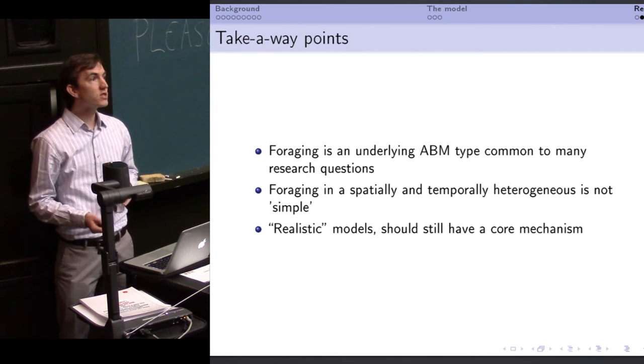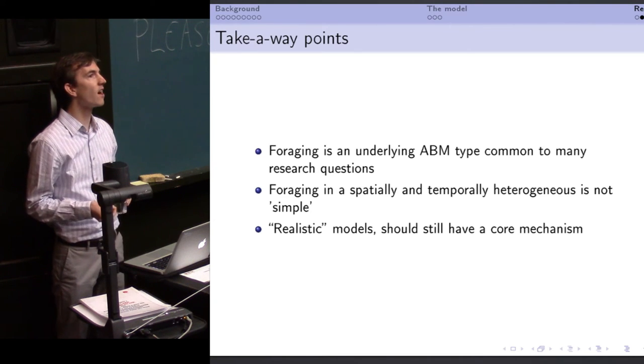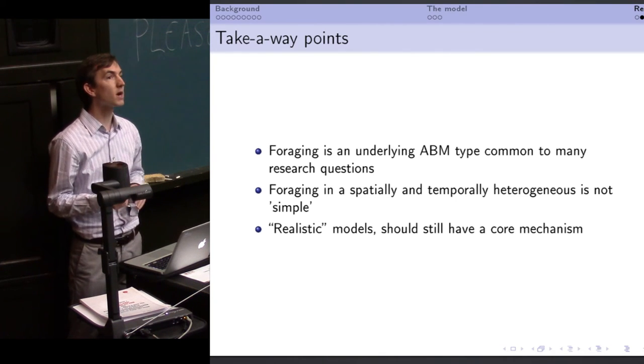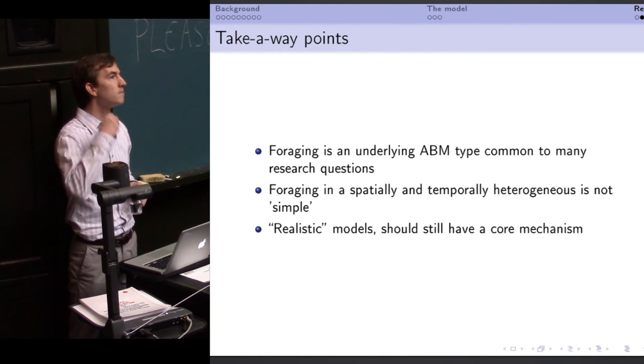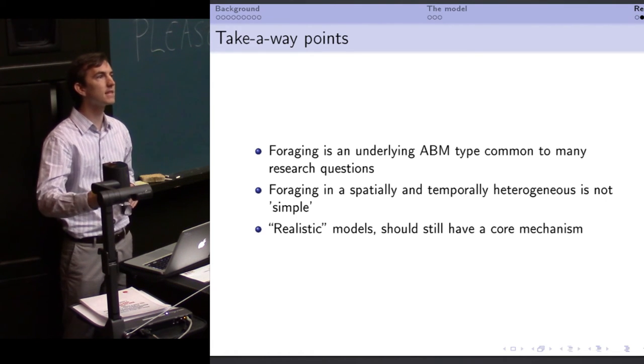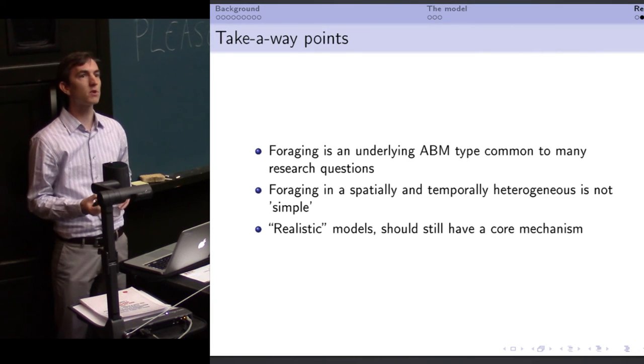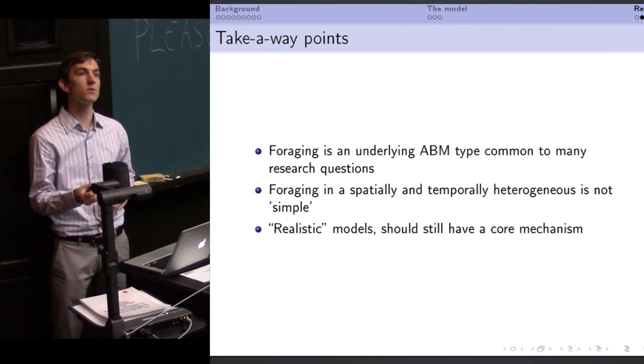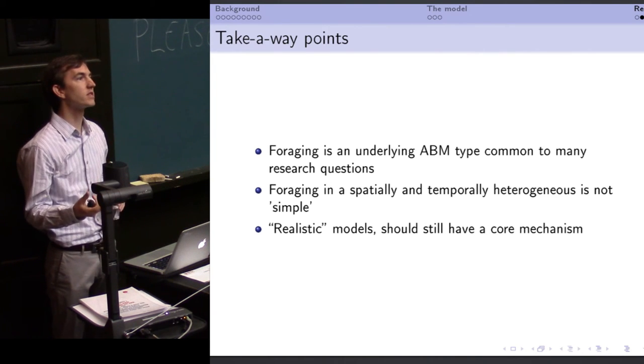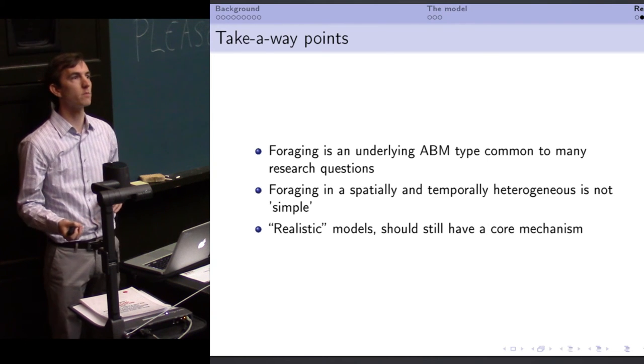Foraging as a system, the so-called simple hunter-gatherers are not at all simple. There are very complicated cognitive processes that go into this, forecasting future return rates not just for the next tidal cycle but seasonally. They have to interact with other groups. It is not at all a simple cognitive system. And so, it is very important to understand what cognition does within a foraging system, especially when we're trying to understand the origins of modern human cognition.